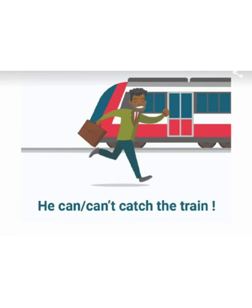The next example: he can catch the train. Here the modal auxiliary is can, and the function is that it is used to express possibility. Alternatively: he can't catch the train. Here the modal auxiliary is can't, and again the function is that it is used to express possibility.